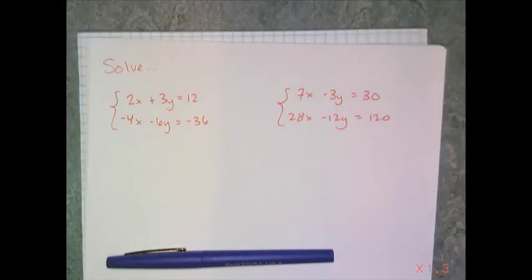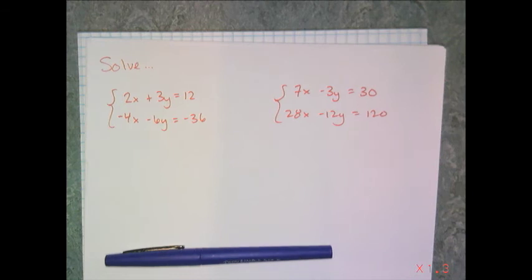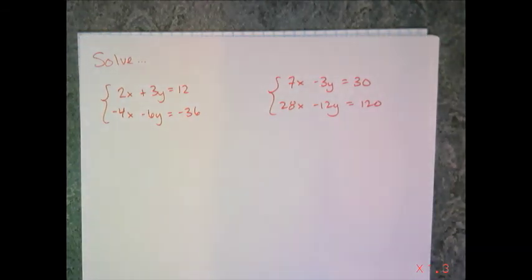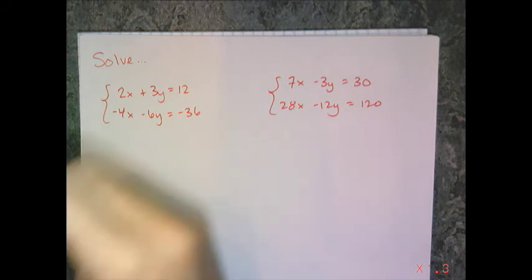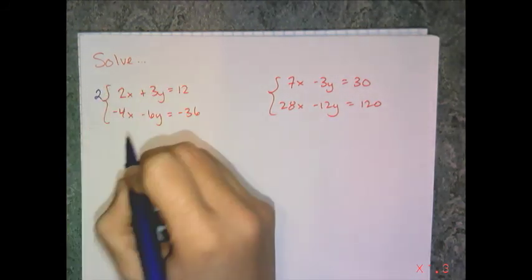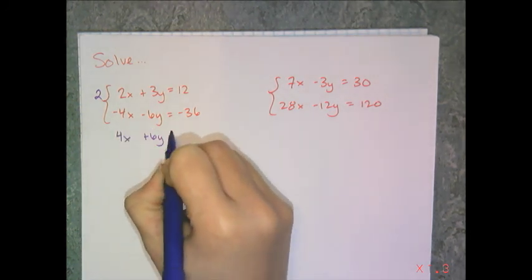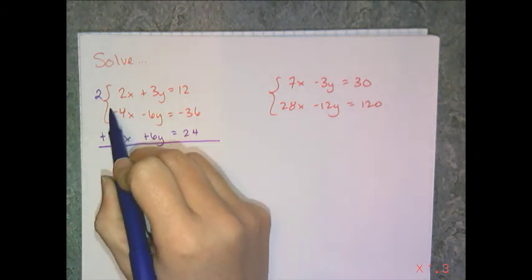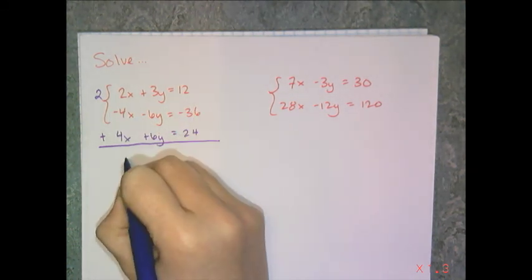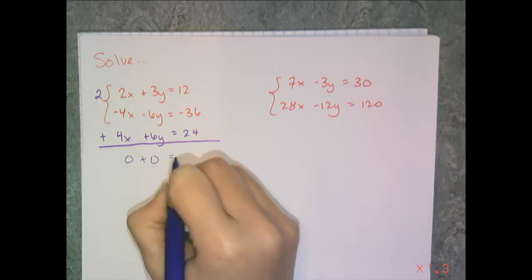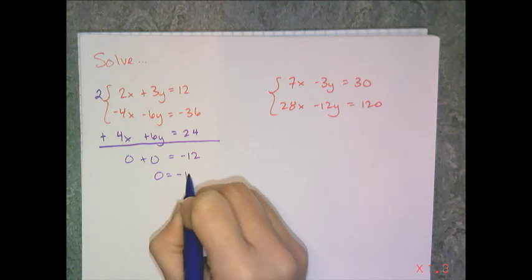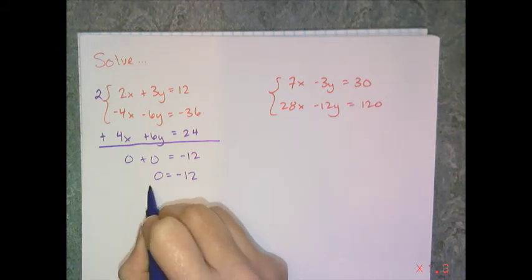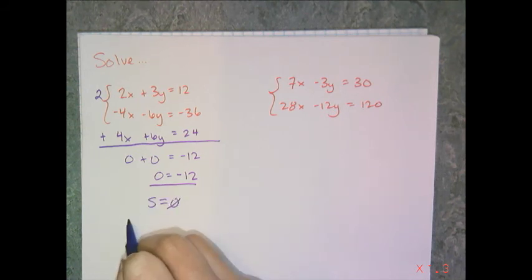Now it's time to see what the special cases look like when solving by elimination. The special cases for systems of equations are parallel lines or lines that are the same. For this first example — 2x plus 3y equals 12 and negative 4x minus 6y equals negative 36 — I multiply the top equation by 2 to get 4x plus 6y equals 24. When I add them, I get 0 equals negative 12. Since 0 does not equal negative 12, there's no solution — the lines are parallel.